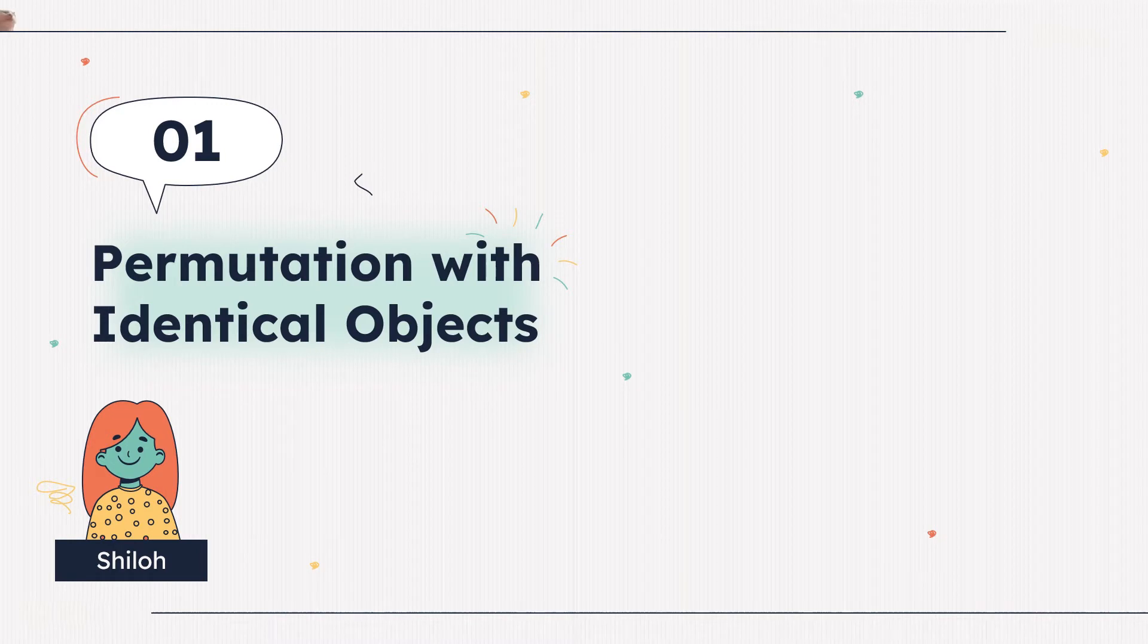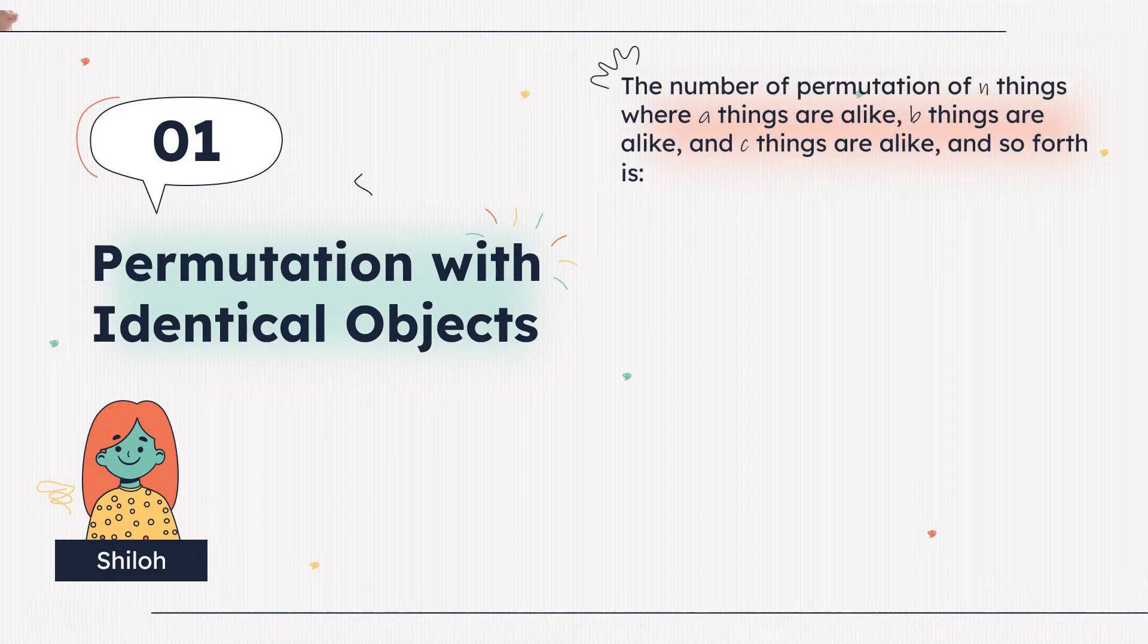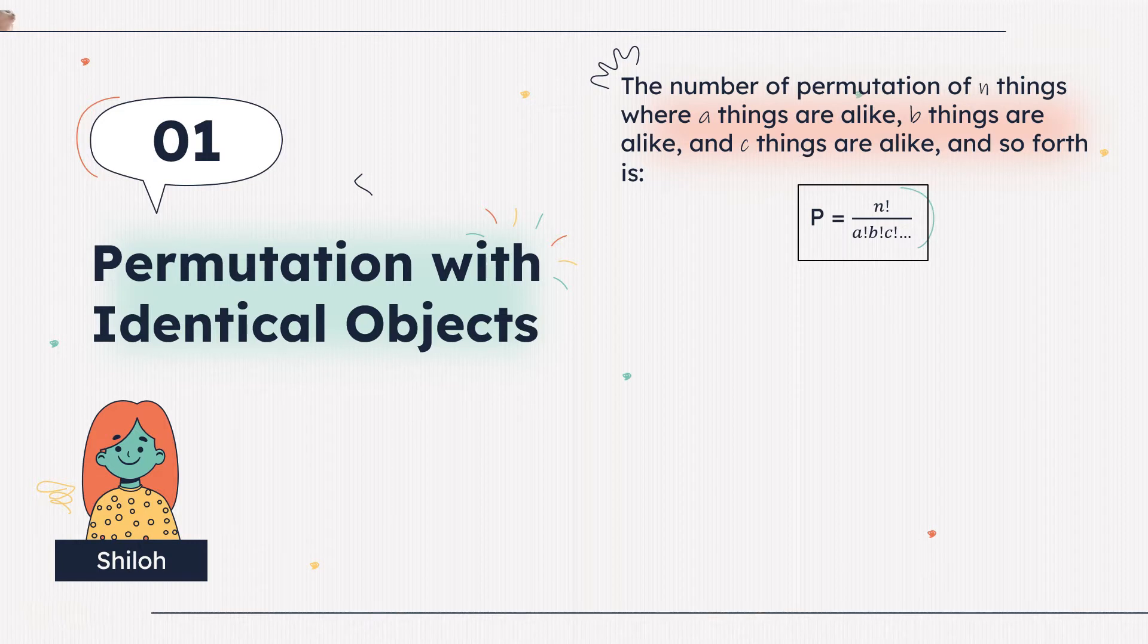Permutation with identical objects is where the number of permutation of n things, where a things are alike, b things are alike, and c things are alike, and so forth, is t equals n factorial over a factorial times b factorial times c factorial.